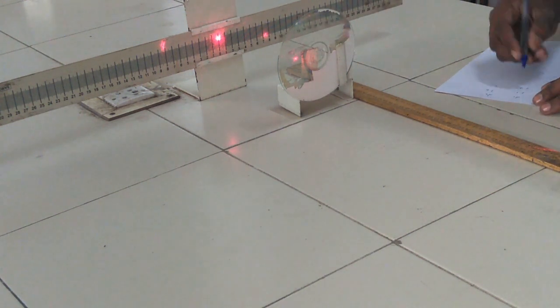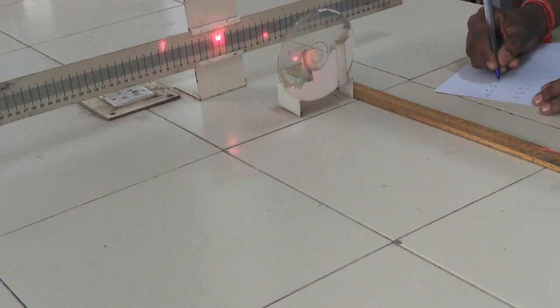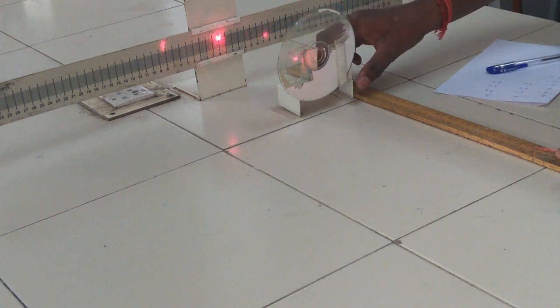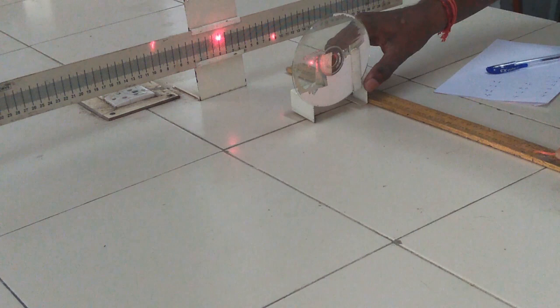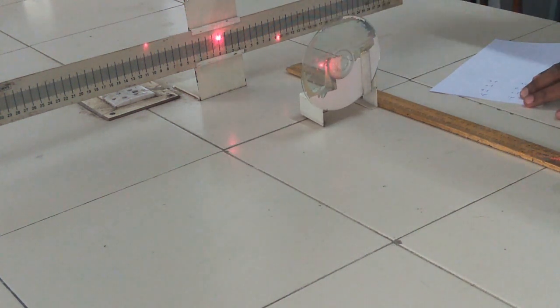Next, move to 15 cm. Measure the distance between the principal maxima to central maxima, left side diffraction. Distance noted. Then principal maxima to central maxima, right side distance noted.